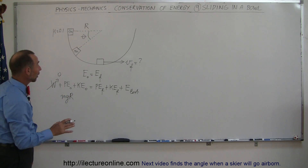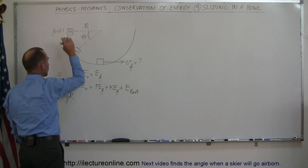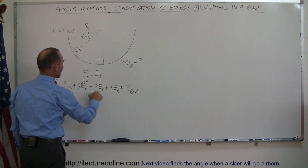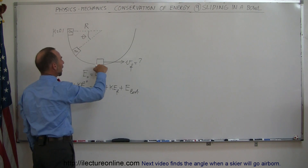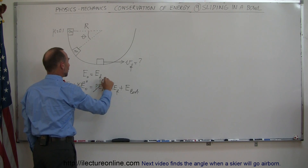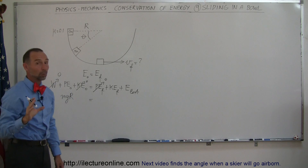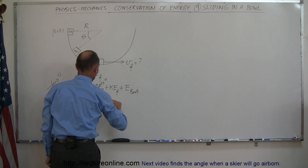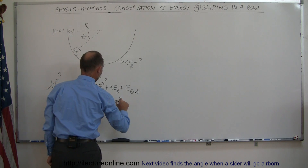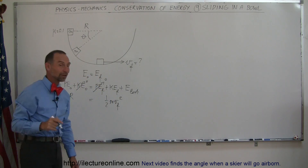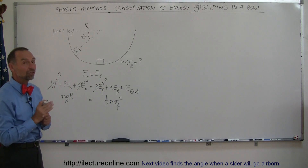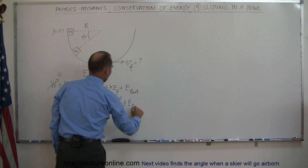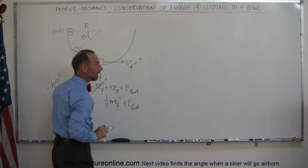The system starts at rest, so initial kinetic energy is zero. At the bottom, the block reaches its lowest height so final potential energy is zero. The block will be moving so it has kinetic energy of one-half mv_final². And finally, we'll write energy lost due to friction — we need to figure out how to calculate that.